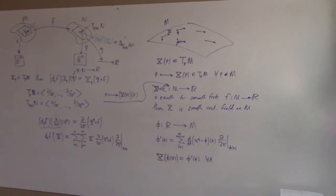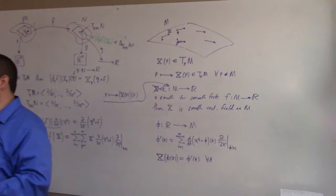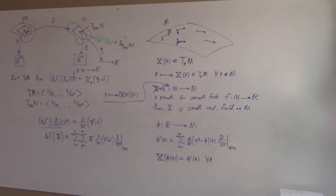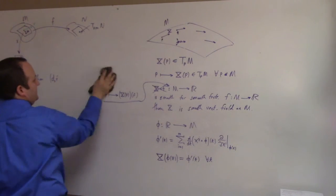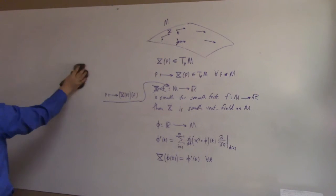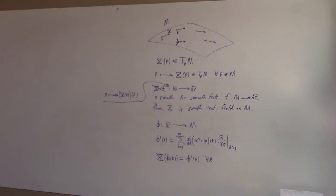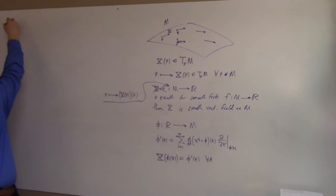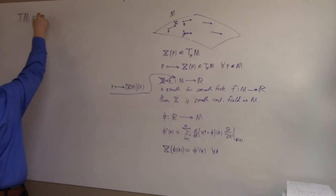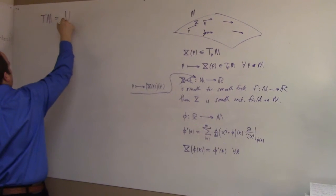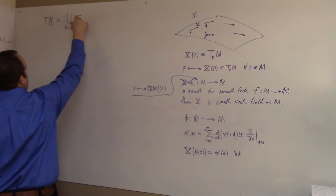This leads us to the study of the so-called tangent bundle. What's the tangent bundle? Well, TM — the tangent bundle — is the union over P in M of the tangent space TₚM. I have a feeling I'm supposed to say disjoint union here.